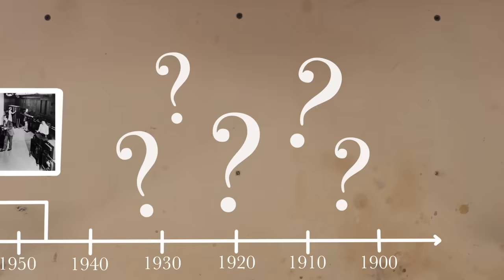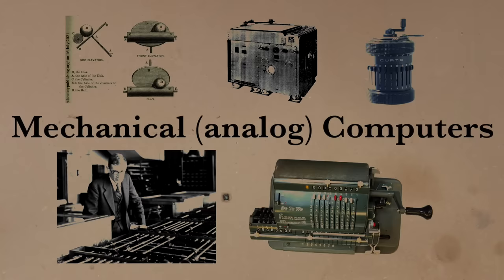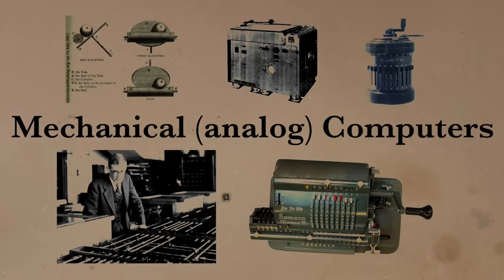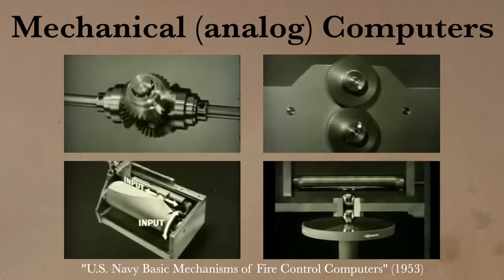Starting in the late 1800s and even as late as the 1970s, engineers were building mechanical analog computers to solve complex equations with unparalleled speed and accuracy. These mechanical computers utilized a host of mechanisms to add, multiply, divide, and even integrate functions based on physical inputs such as the rotation of a rod or the position of a knob.